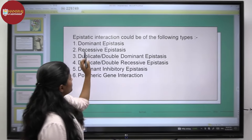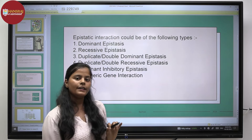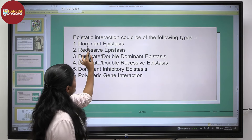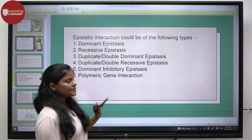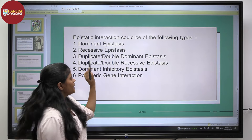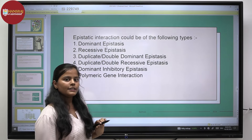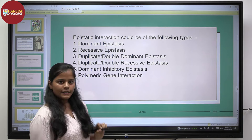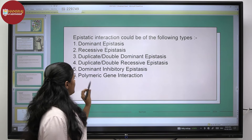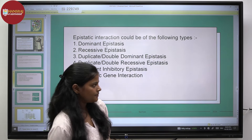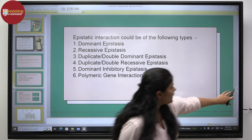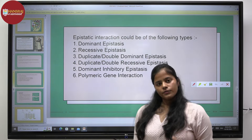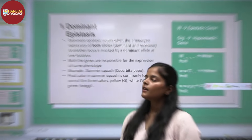Moving on to the different types of epistatic interactions, they include dominant epistasis, recessive epistasis, duplicate dominant and duplicate recessive epistasis, dominant inhibitory epistasis, and polymeric gene interaction. In this video, we are going to be talking about all of these different types.